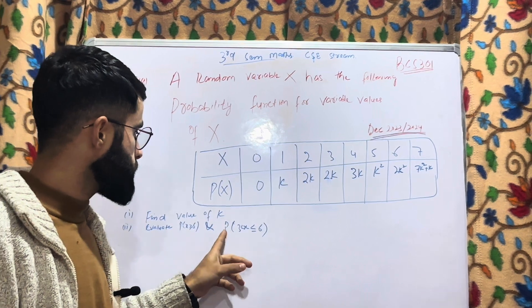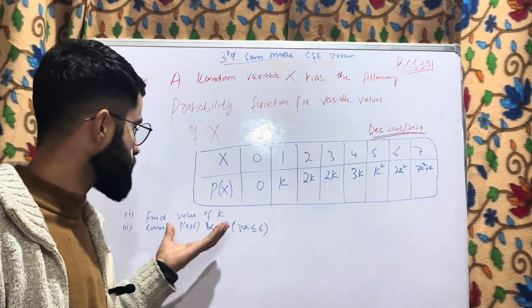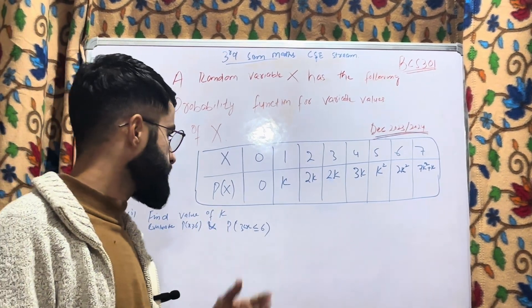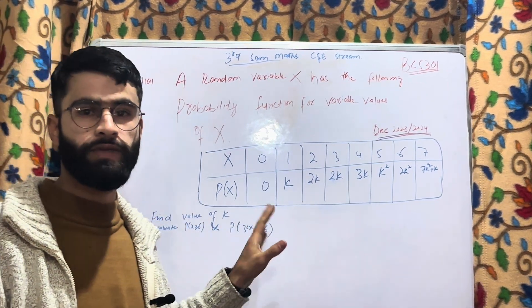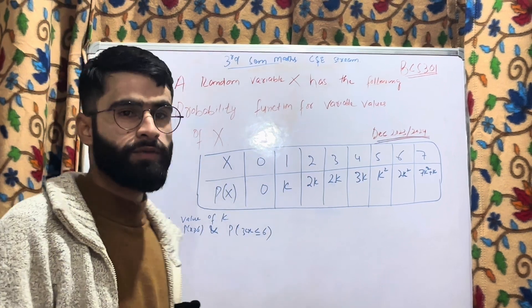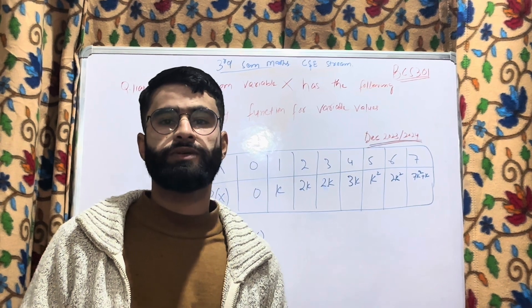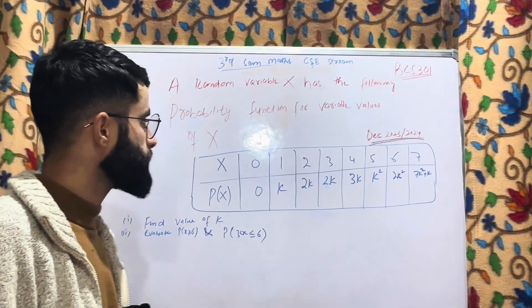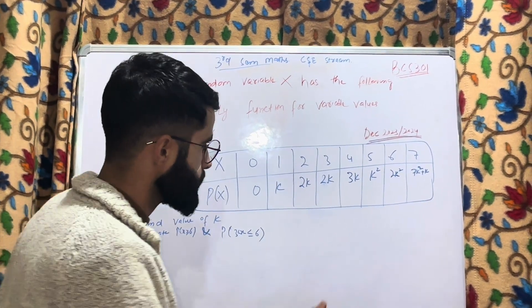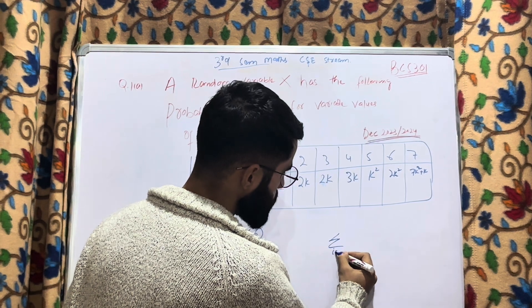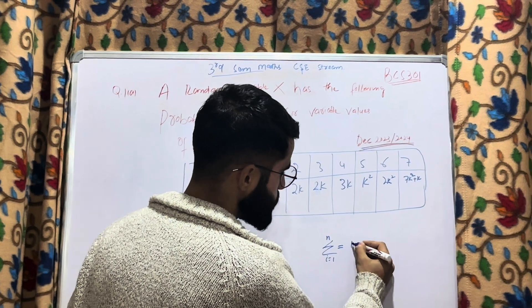We also need to find P(3 < X ≤ 6). I will tell you the procedure first, then we come to evaluating these probabilities. First of all, we have to find the value of k. You already know from previous classes — from 10th, 11th, or 12th — that the sum of probabilities is always equal to 1. The equation is: summation of P(x) from i=1 to n is always equal to 1.